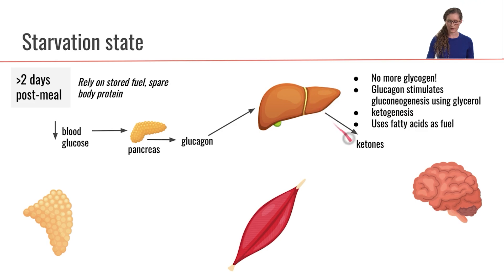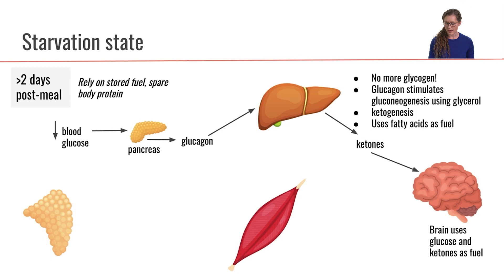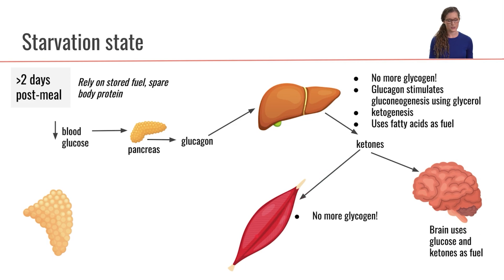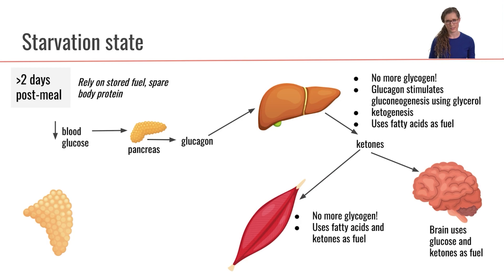The liver is going to be releasing a large amount of ketones into the bloodstream — a little bit of glucose as well, but mostly ketones. The brain can now adapt to use those ketones as fuel; it will still use whatever glucose is available, but it can also use ketones. The muscle, which has no more glycogen left, will also use fatty acids and ketones as fuel.